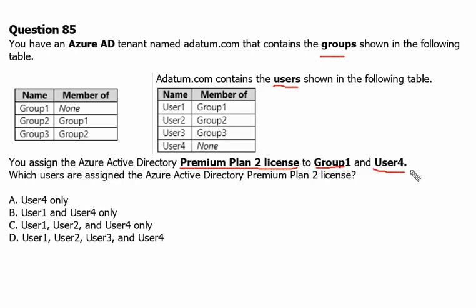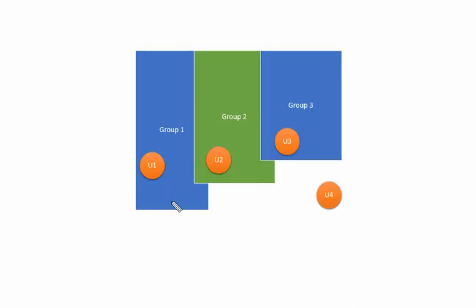The question asks which users are assigned the Azure Active Directory Premium Plan 2 licenses. The examiner would like to test our knowledge about inheritance of licenses to subgroups. We will visualize it through a diagram.